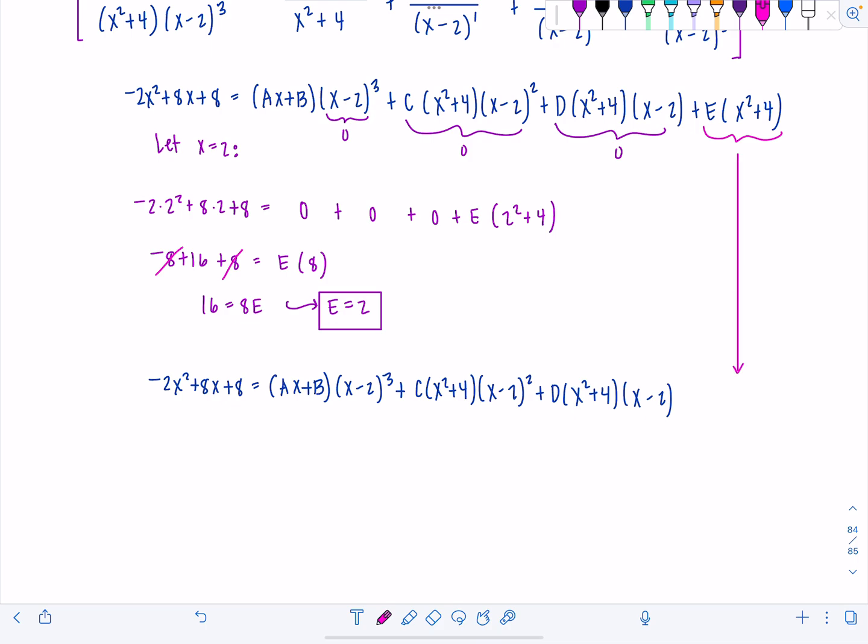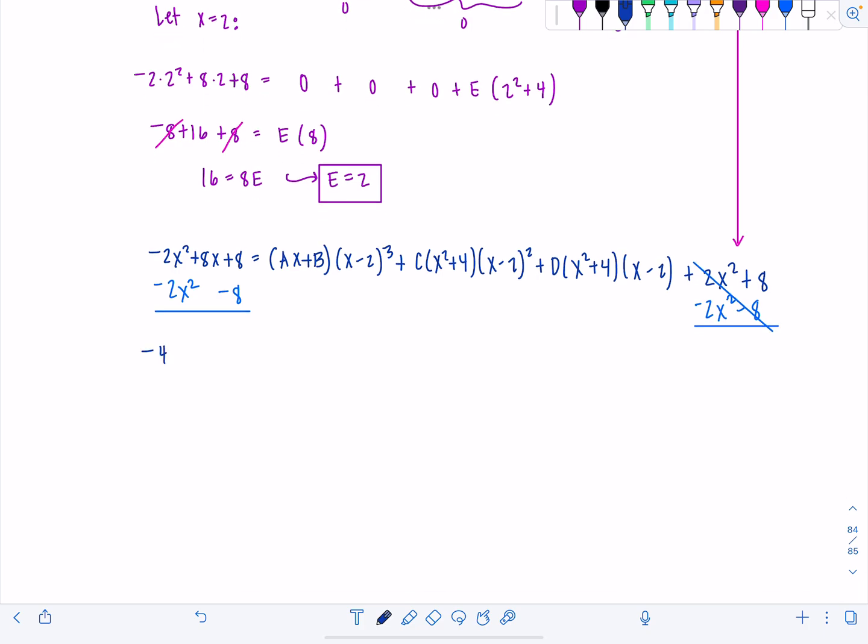And then I am going to plug in 2 for e right here. So that means I'm going to have negative 4x plus 2x squared plus 8. I already distributed it. What do you do now? You're going to subtract that over to the other side. So minus 2x squared minus 8. So this is gone. And then now I have on the left hand side, negative 4x squared plus 8x. And I can factor that. I can take out a negative 4x and I'm left with x minus 2 equals ax plus b times x minus 2 cubed plus c times x squared plus 4, x minus 2 squared plus d times x squared plus 4 times x minus 2. And then I can cancel out an x minus 2 from everybody. Take one out of here. Now this is just squared. This is to the first and this is gone.